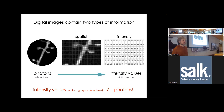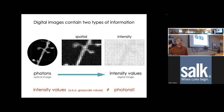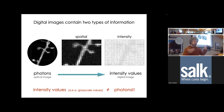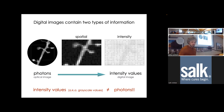An important point here is that intensity values are not directly photons. So when you see a 10 in your image, in most cases, that doesn't mean you collected 10 photons. Don't assume that you're looking at the number of photons per pixel.